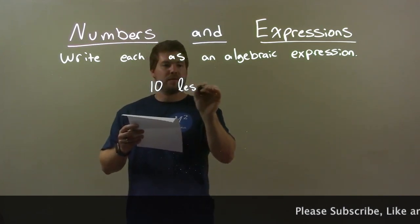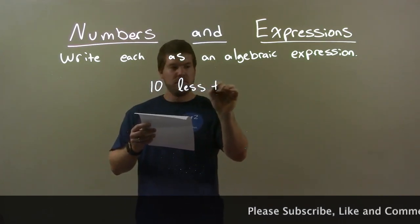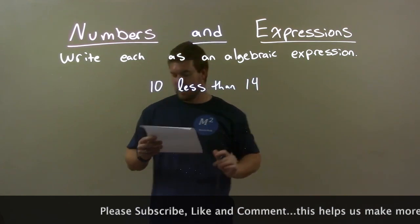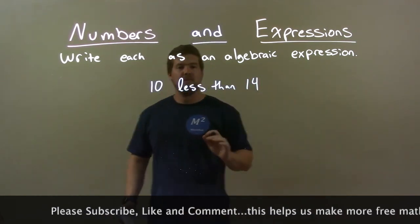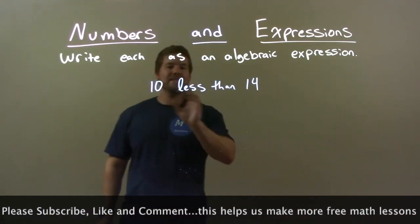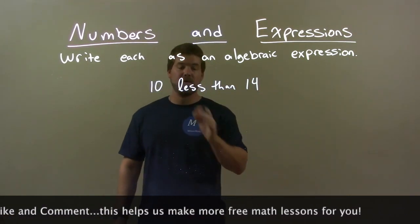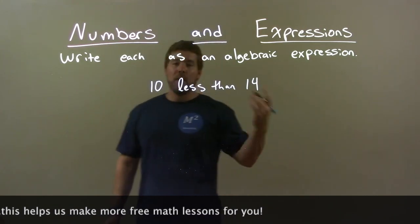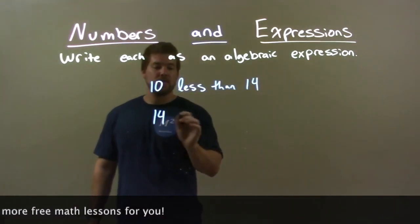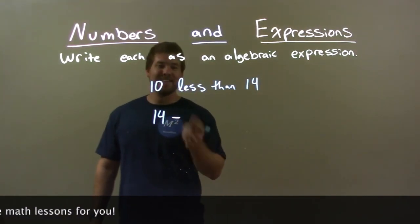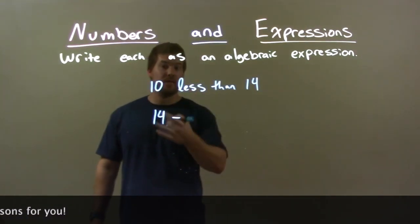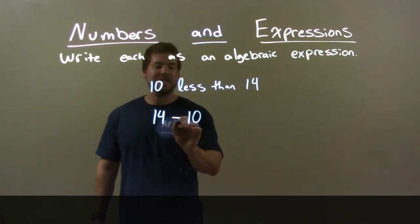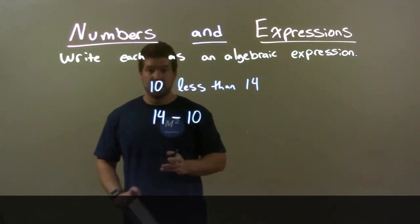10 less than 14. So in this case, we're taking 10 less than 14 — 10 less than 14. So we actually write the 14 first, and we're taking 10 from it. That's subtraction. So we would write this as 14 minus 10.